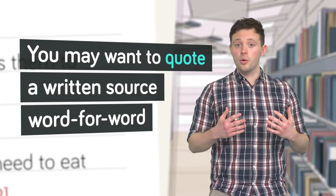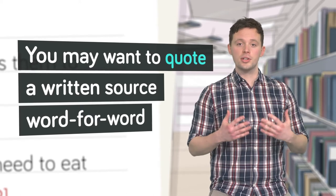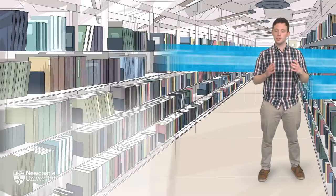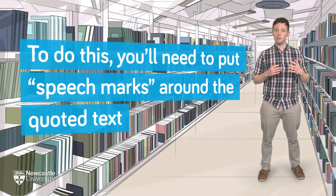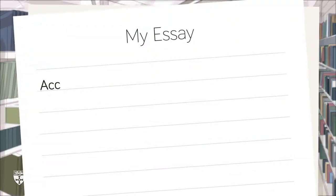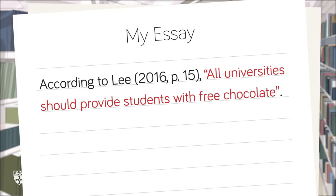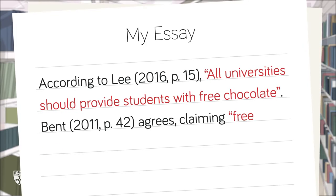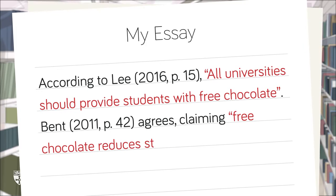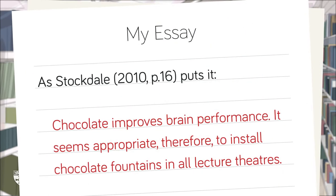Now, you might want to quote a written source word for word so the reader can see the original text that you're commenting on. To do this, you'll need to put speech marks around the quoted text. This is known as a direct quotation, which tells the reader that the text is identical to its original source. When quoting short phrases, you should incorporate them in your sentences like this. You could even put large quotations in their own indented paragraph if you want.